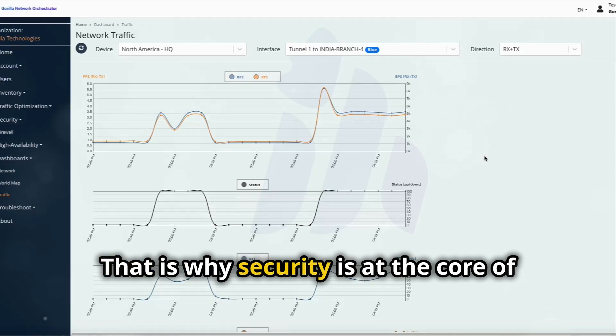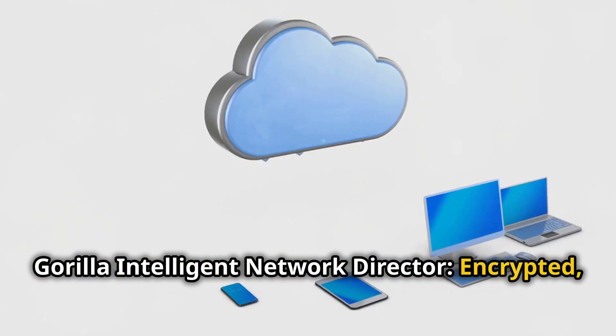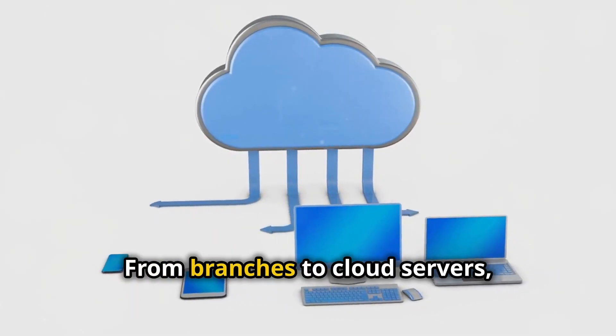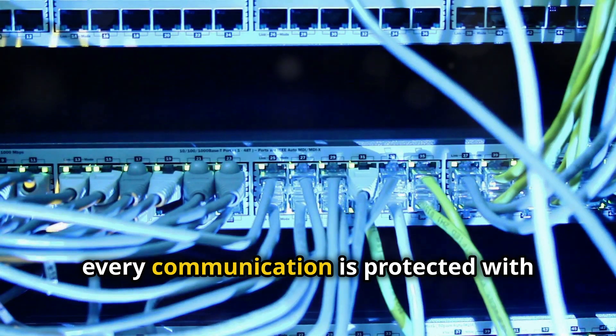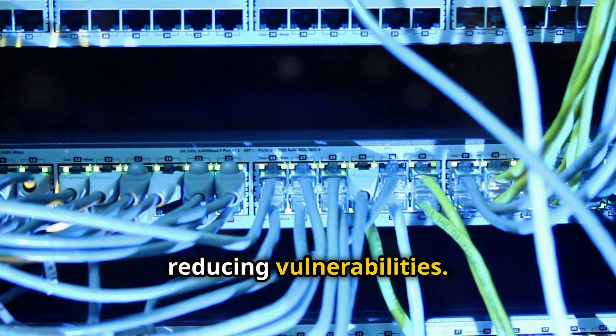But power without security is a risk. That is why security is at the core of Gorilla Intelligent Network Director. Encrypted secure tunnels safeguard your data no matter where it goes. From branches to cloud servers, every communication is protected with cutting-edge encryption protocols, reducing vulnerabilities.